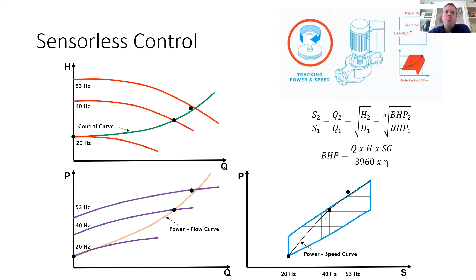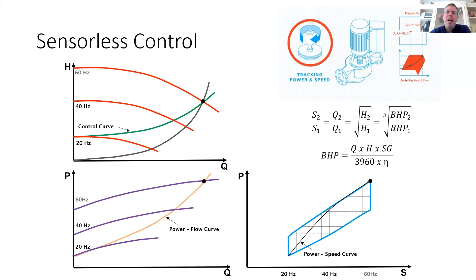So again, as valves start to open in the system, your flow is going to increase and your head will decrease in that same square root relationship. So the resulting power consumption at that given speed is going to increase, taking you off the control curve. So in the opposite fashion, the pump controller will speed up the pump until it reaches the appropriate power consumption.